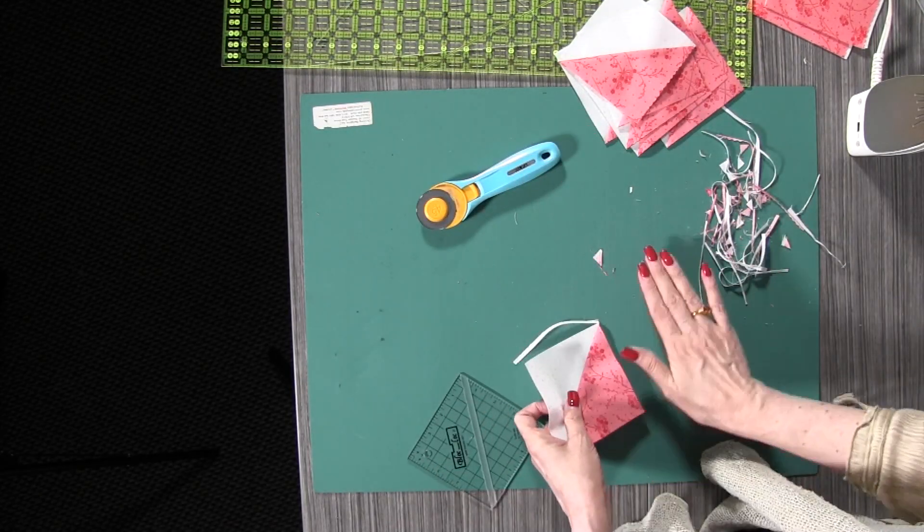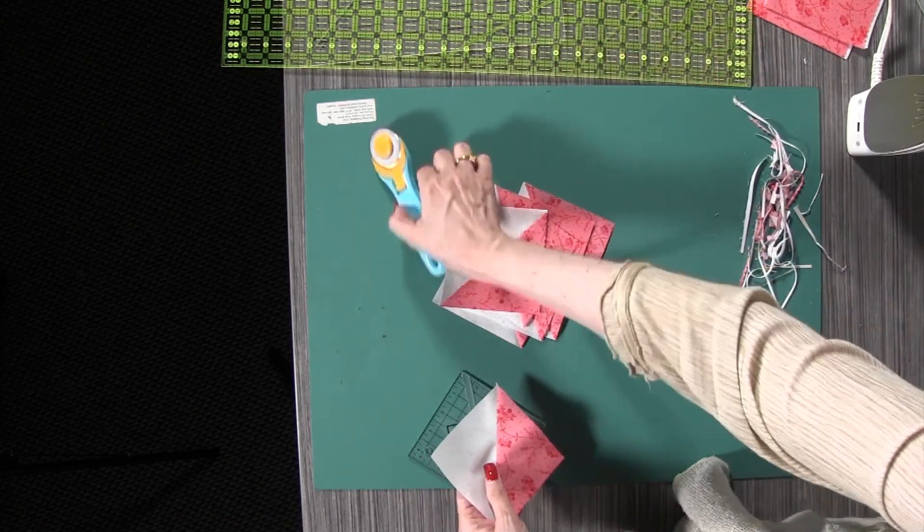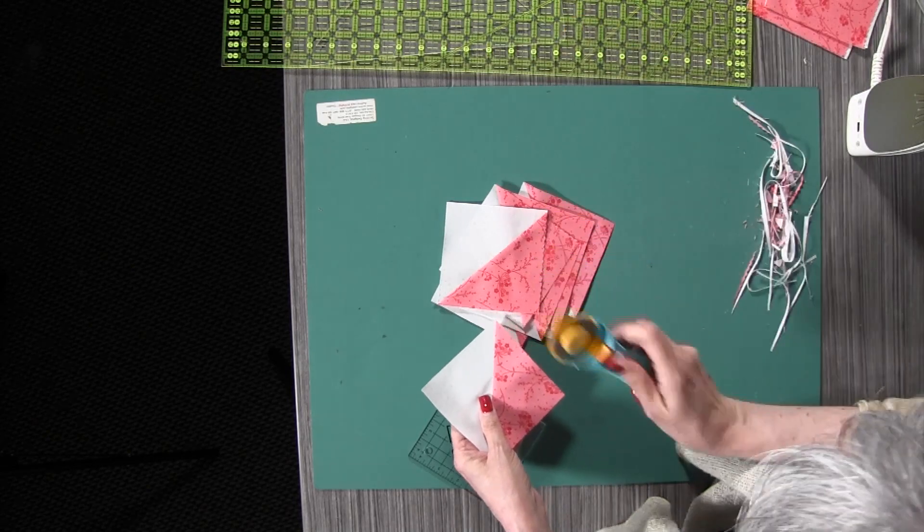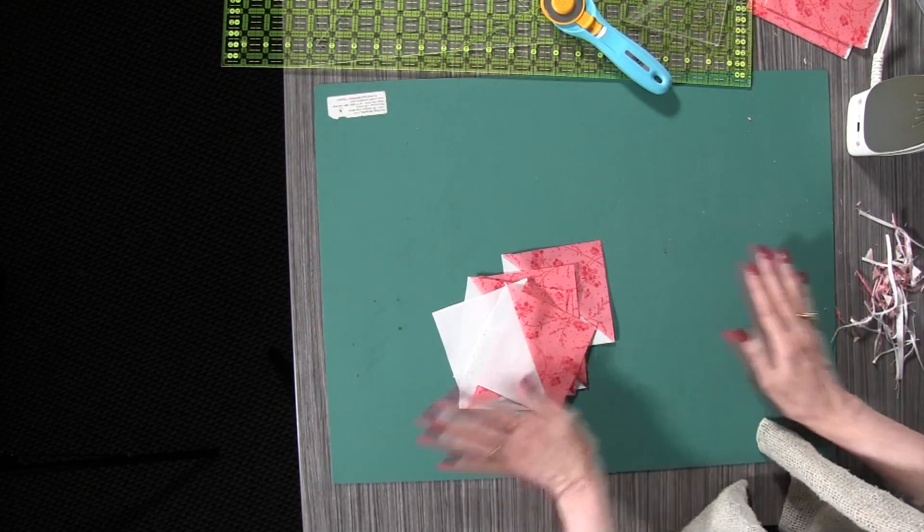And there we have our eight half square triangles, just fast as can be. Don't forget to close your rotary cutter and we'll set those aside, get rid of all that.